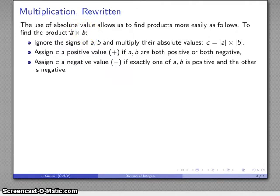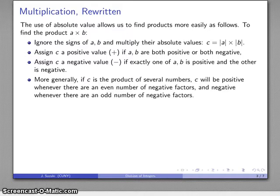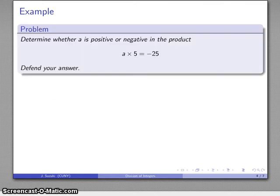More generally, if c is product of several numbers, c is going to be positive whenever there's an even number of negative factors, because the negative factors, pairs of them, give us a positive factor again. Any positive factors don't change the sign. Likewise, if there's an odd number of negative factors, then I'm going to have at least one positive and negative pair, and that's going to give me my negative.